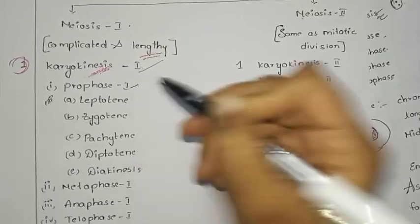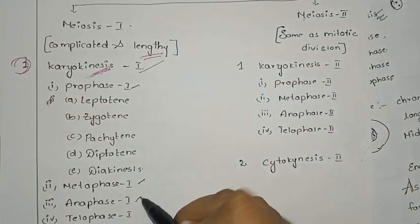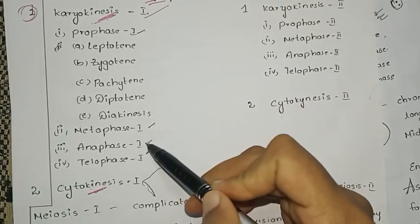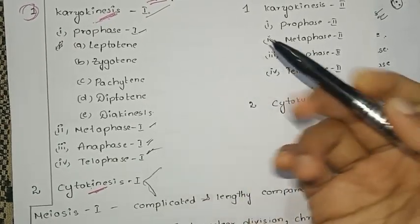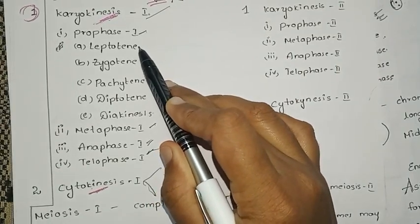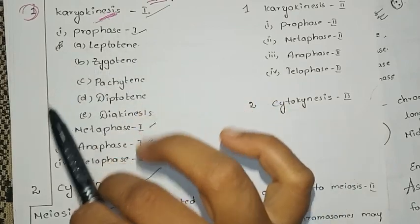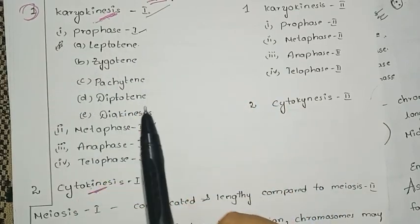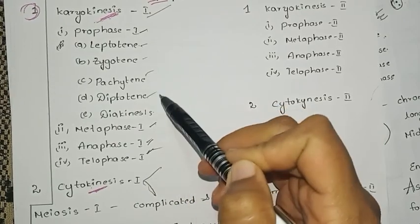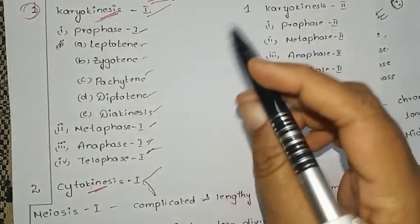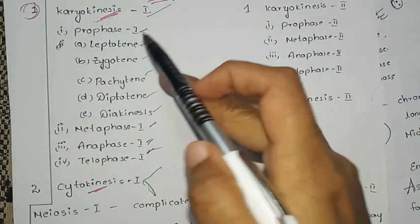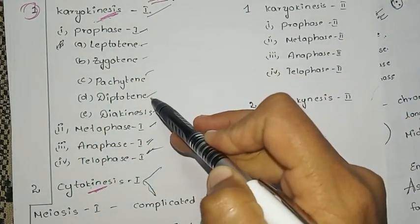The subdivisions of Meiosis 1 Karyokinesis are Prophase 1, Metaphase 1, Anaphase 1, and Telophase 1. These names are very important. Prophase 1 itself is subdivided into five stages: Leptotene, Zygotene, Pachytene, Diplotene, and Diakinesis. These names are very important.